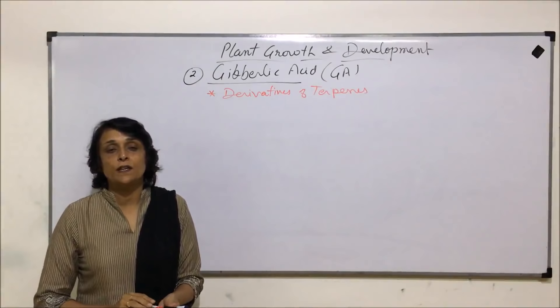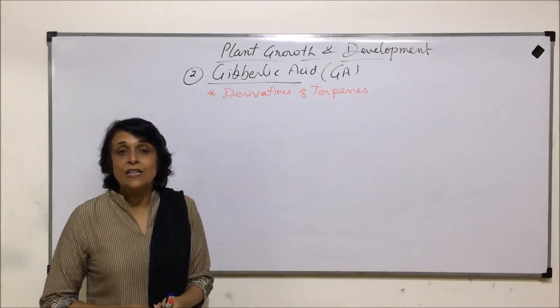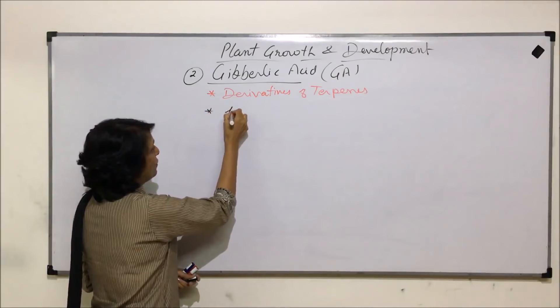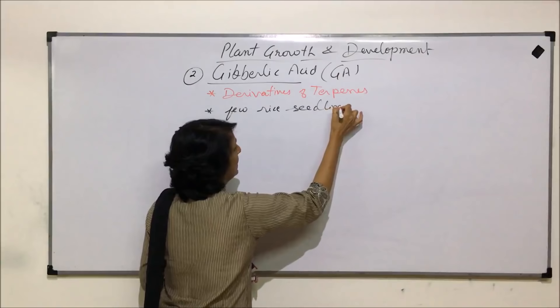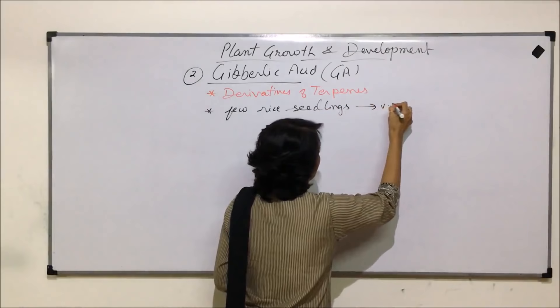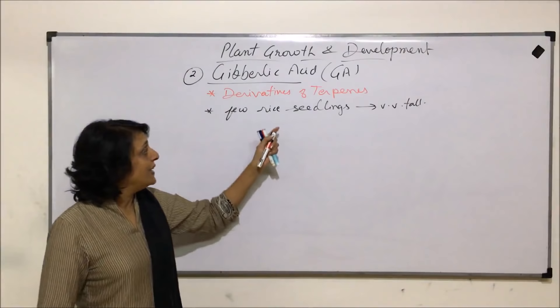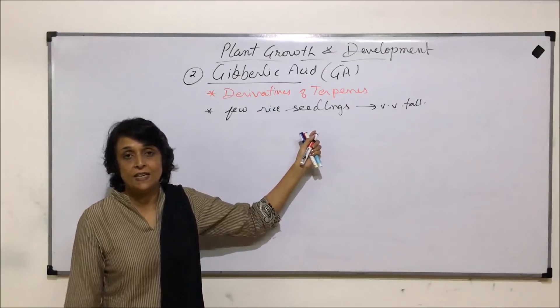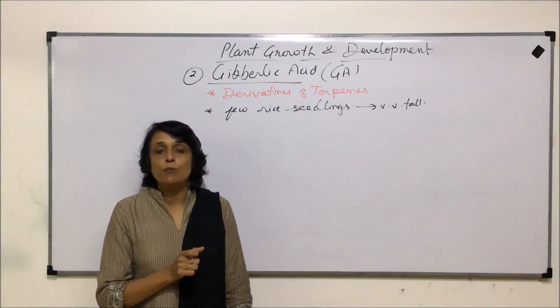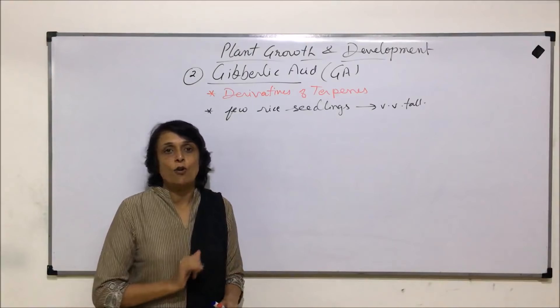The story behind the discovery of gibberellic acid is very interesting. Farmers in Japan observed that some rice seedlings grew exceptionally tall. The normal height of a rice plant is around 3 to 4 and a half feet, but these plants grew very, very tall — up to 12 to 15 feet. The rice plant has a thin stem, so that thin stem was not able to hold such a tall plant and they fell flat on the ground.